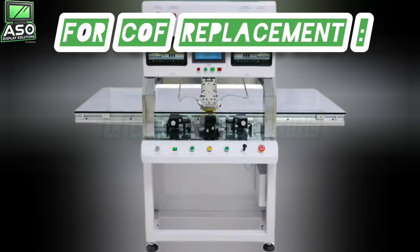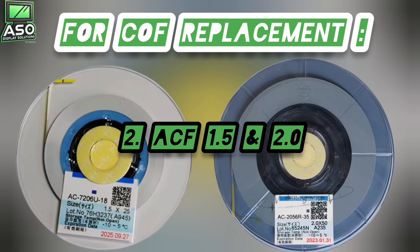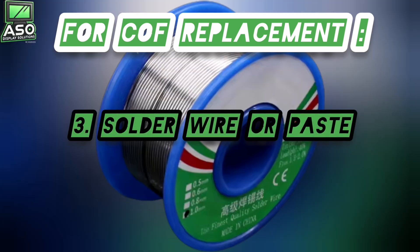One, a bonding machine. Two, ACF tapes, the glass side and the PCB side. And then perhaps three, soda wire or paste.